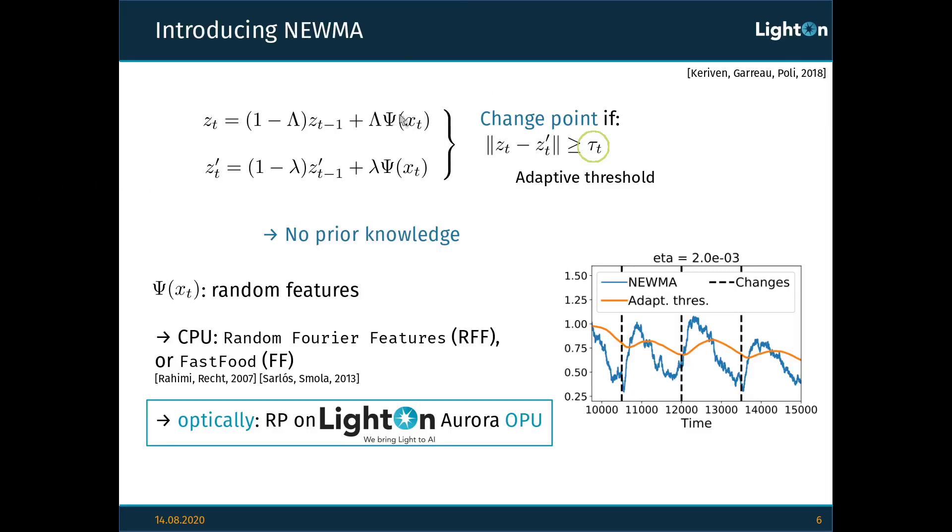So now let's talk about this function psi. The authors of the Neuma paper say that a good choice for psi is to use random features. Random features can be computed either using CPU-based algorithms, such as random Fourier features, or RFF, or fast food, FF, but we can also compute them optically using random projections that are computed on LightOn Aurora OPU.